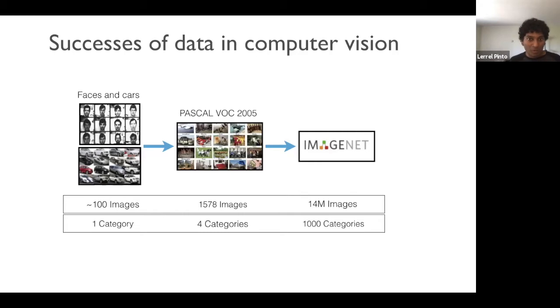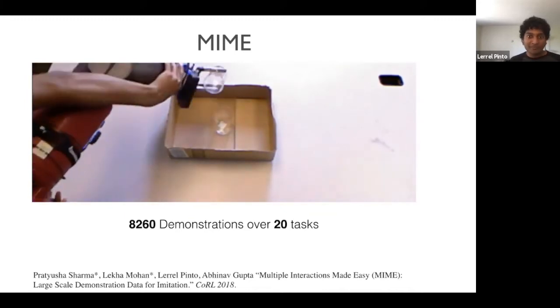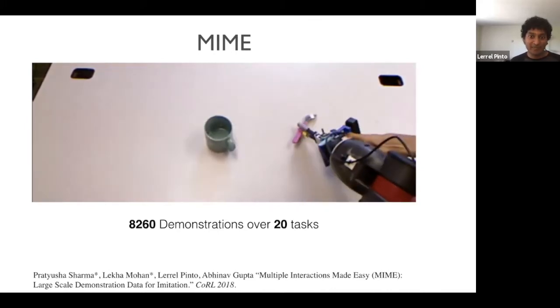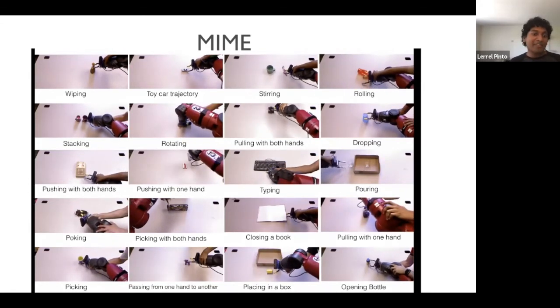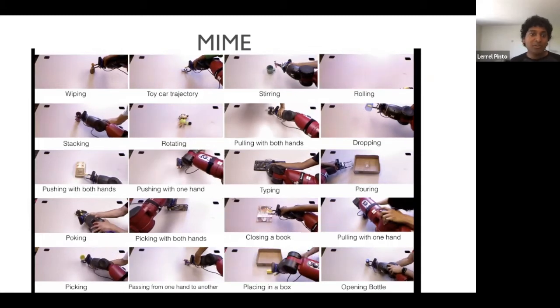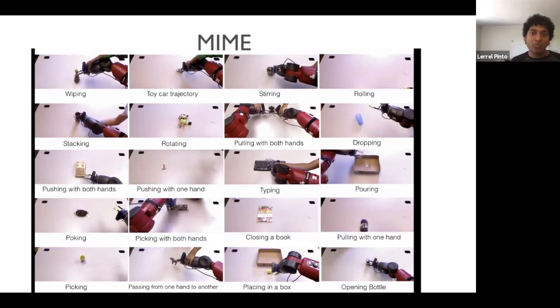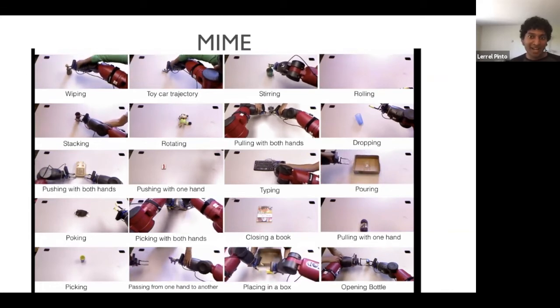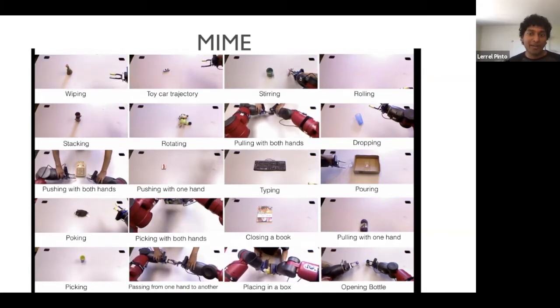So inspired by this, what we have done is created one of the largest imitation learning datasets for robotics. So we call this MIME, which is short for Multiple Interactions Made Easy, where we have around 8,000 demonstrations over 20 different tasks. So these 20 tasks are very varied in some sense, where you have easy tasks like how to poke objects, how to push objects, and we also have much harder tasks like stacking, for instance, or closing a book, or bimanual opening of bottles. Note that all of these tasks are not just done on one object, each of these tasks are done on multiple objects, and also using multiple humans who provide these sort of demonstrations.